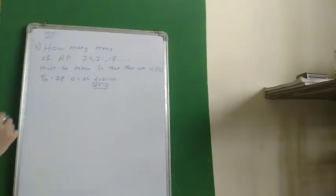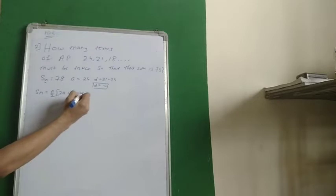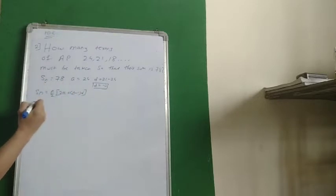So we use the formula to find N. N is how many terms? Therefore, S_N is equal to N upon 2, 2A plus N minus 1 into D. Sum of how many terms? We don't know, but we know the sum is 78.